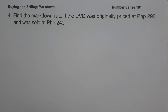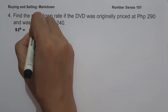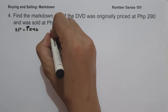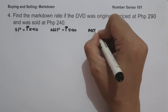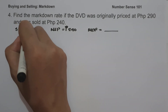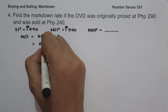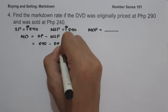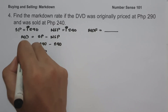On our last example: find the markdown rate if a DVD was originally priced at 290 pesos and was sold at 240 pesos. To determine the markdown rate, let us identify the given: selling price is 290 pesos, new selling price is 240 pesos. Let us first find the markdown: markdown equals selling price minus new selling price, so 290 minus 240 equals 50 pesos. This is our markdown.